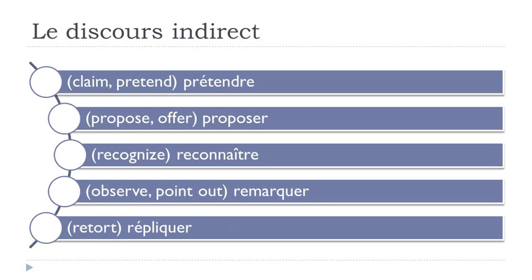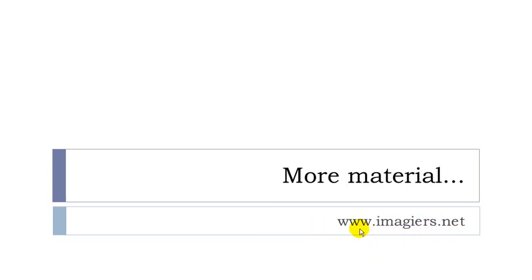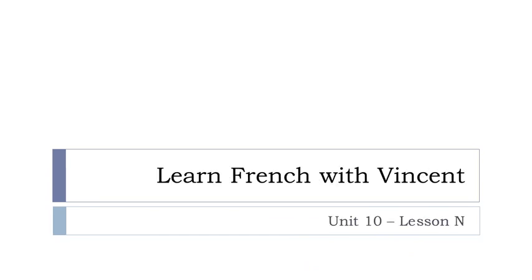I wanted to introduce the main verbs that require or that you could use to construct un discours indirect. Keep in mind that you will have to put que after these verbs. I hope it was clear. If you want more videos, youtube.com/imagier and the website is imagier.net. Have a great day, bye bye.